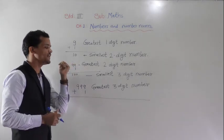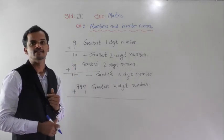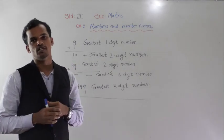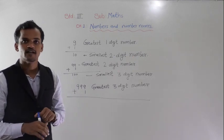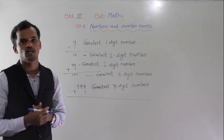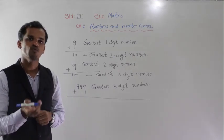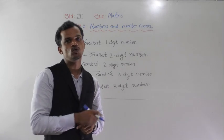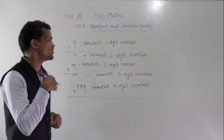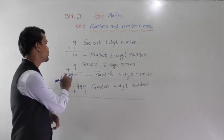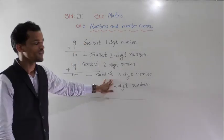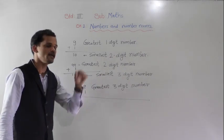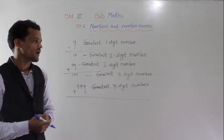We know 99 is the greatest 2-digit number. If we add 1 into 99, then we will get 100. And 100 is the smallest 3-digit number.